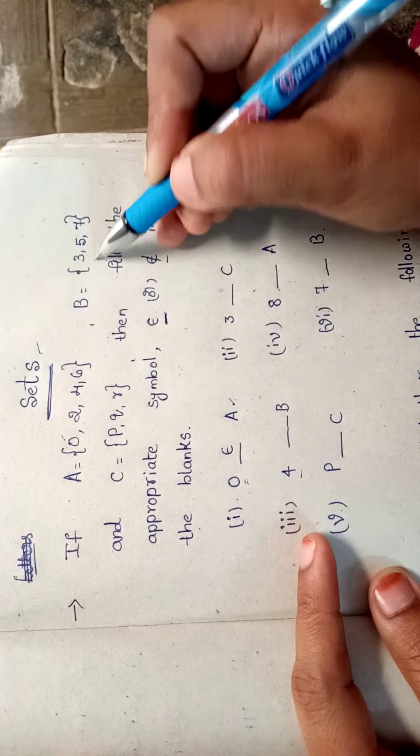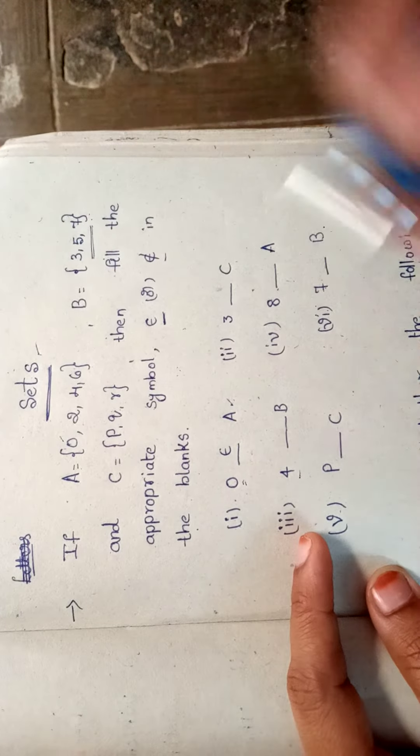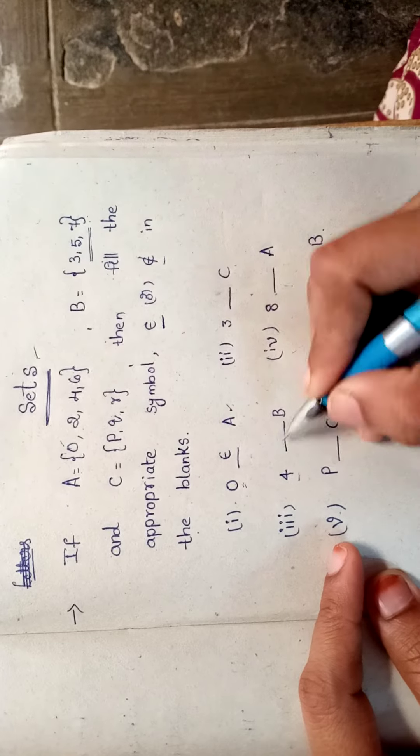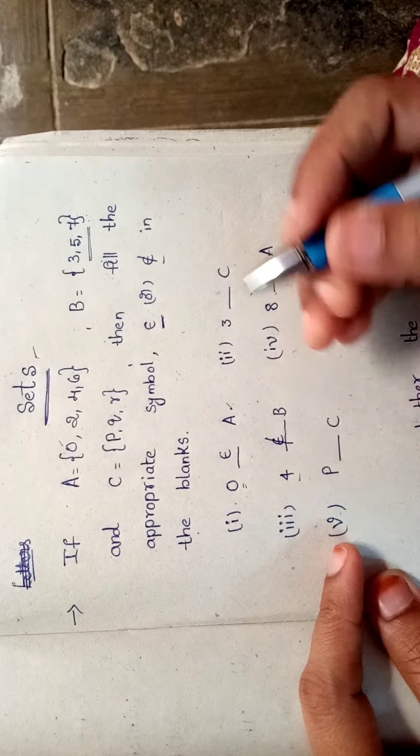No, there is no four in the set B. So we have to write here 'doesn't belong to' or 'does not belong to.'